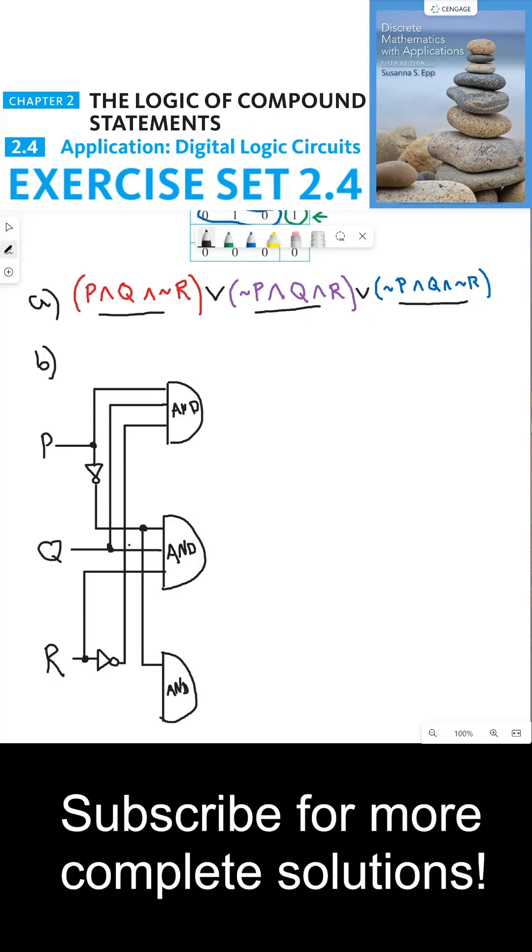Okay, so we have NOT P, next we need Q, we can create a split right here, and next we need NOT R, which we can get right here with a split. Okay, so now that we've built our three AND gates, each with three inputs.